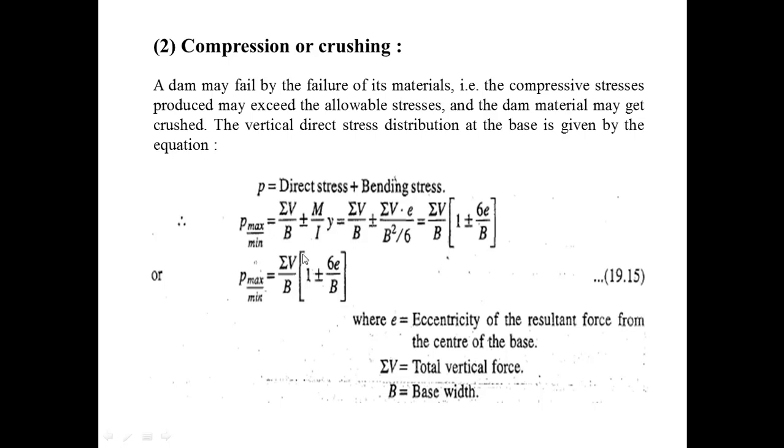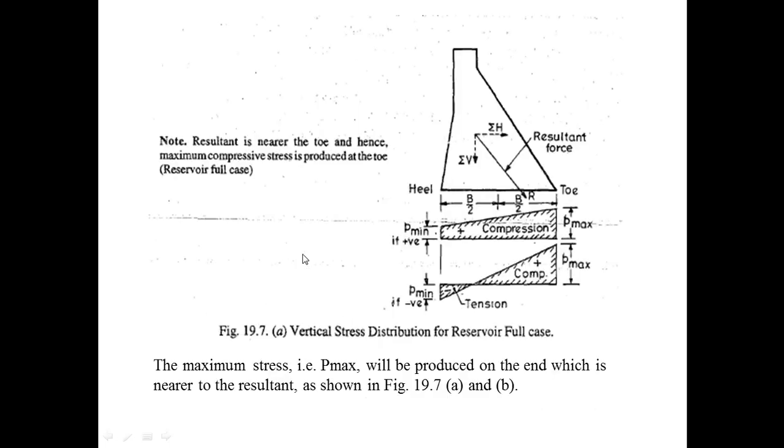The maximum stress, that is Pmax, will be produced on the end which is nearer to the resultant, as shown in Figure 19.7(a) and (b). In this diagram, the vertical stress distribution for the reservoir full case is shown. When the reservoir is full, the resultant will be produced at or near the toe.